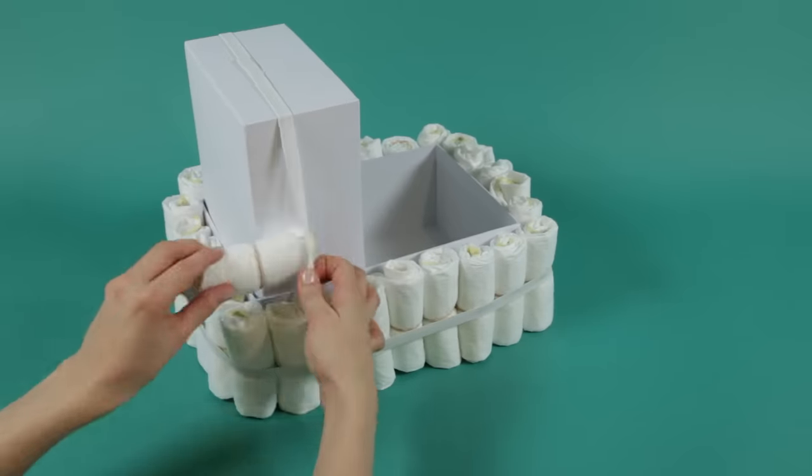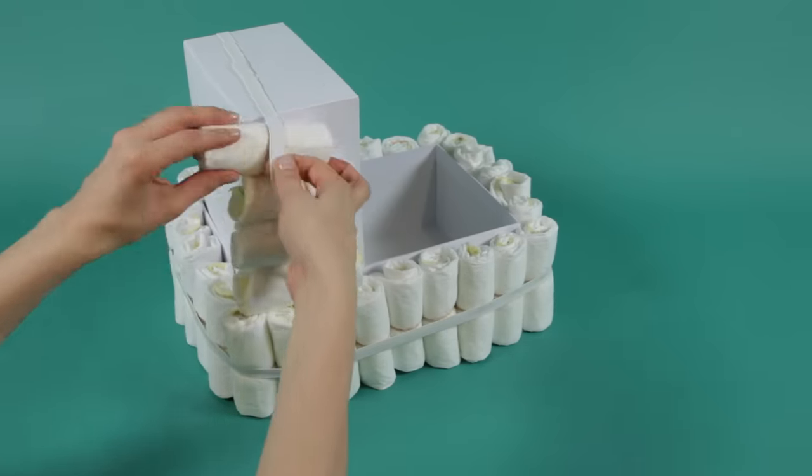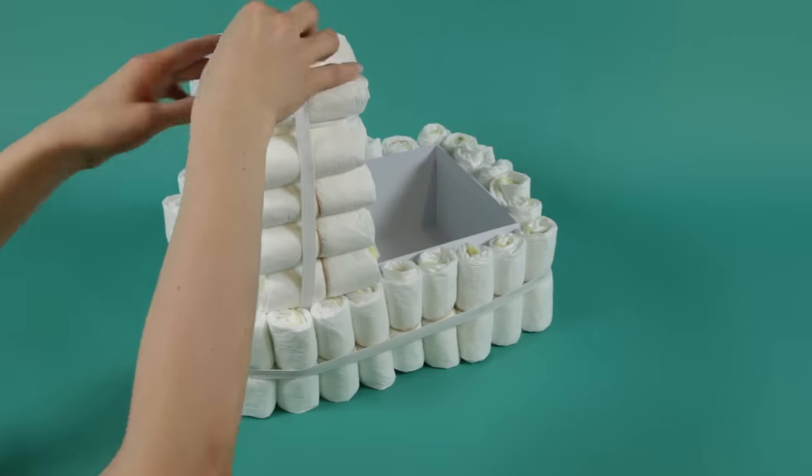Roll and secure the diapers across the top and side of the vertical box, stopping at the intersection with the lower box.